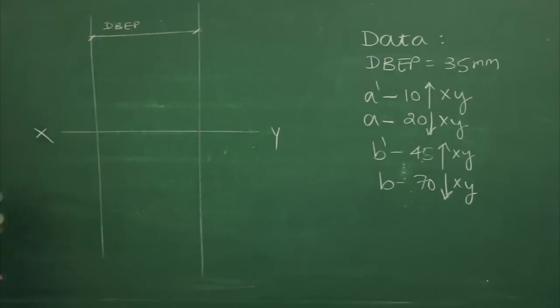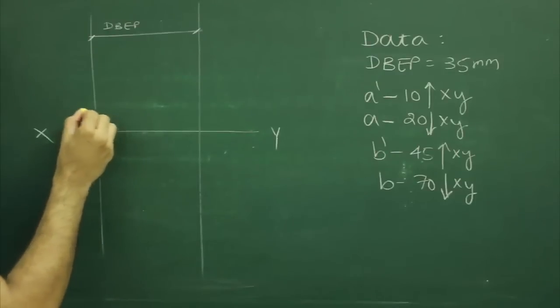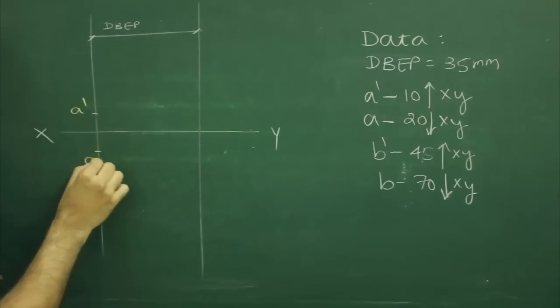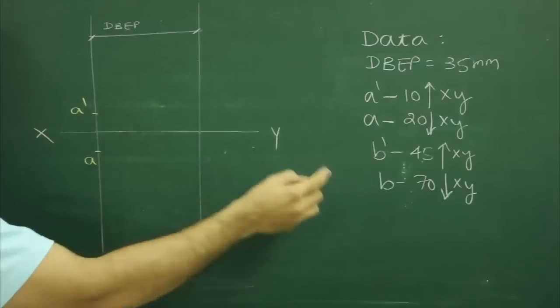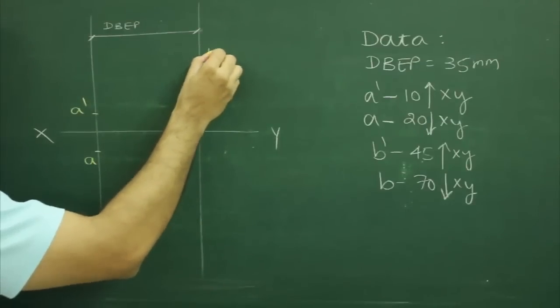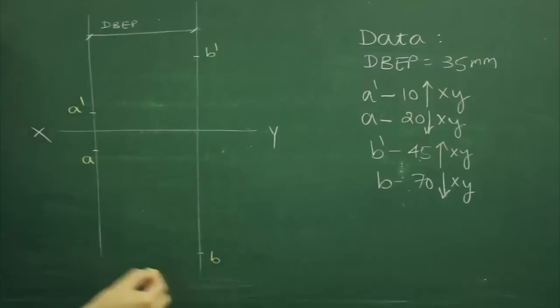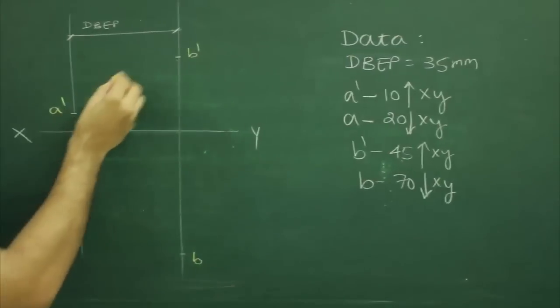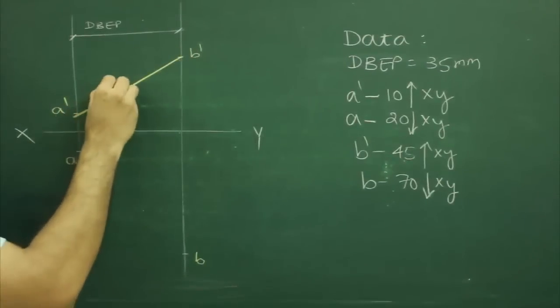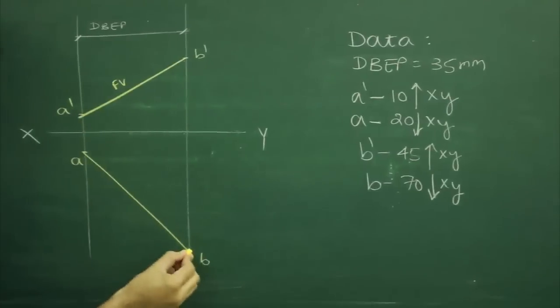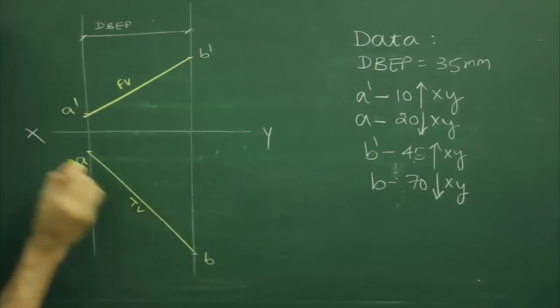Then we will mark point A' which is 10 mm above X-Y plane and 20 mm in front of X-Y plane. Then we will join A' to B', so that will be your front view AB, and that will be top view.